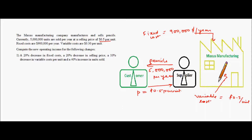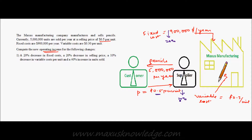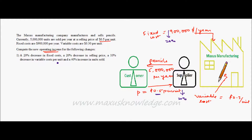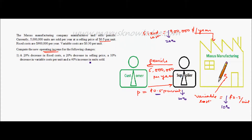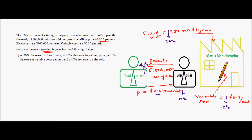With this information, we are asked to find the change in operating income. The fixed cost is going down by 20%, the selling price is also going down by 20%, the variable cost per unit is going down by 10%, and the units sold is going up by 40%. With all these changes, we have to find the impact on operating income.